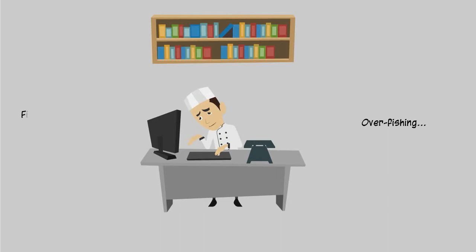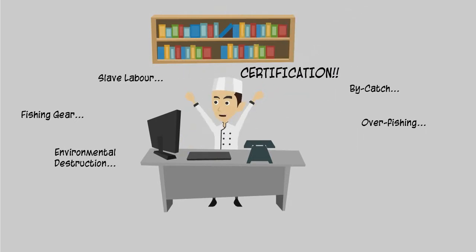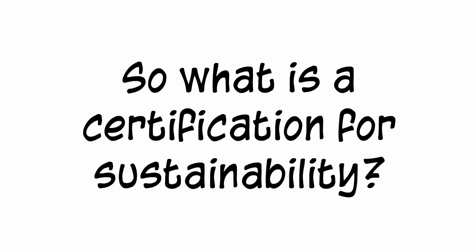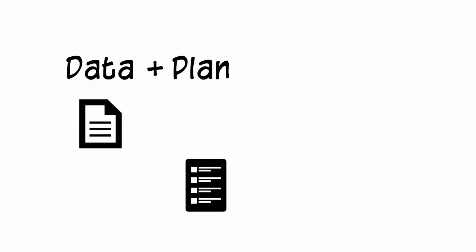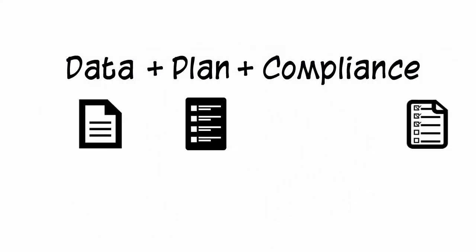Overfishing, fishing gear, bycatch, environmental destruction, slave labor, certification. So what is a certification for sustainability? To be certified as sustainable, a fishery or farm must have data, have a plan, and be able to demonstrate compliance.